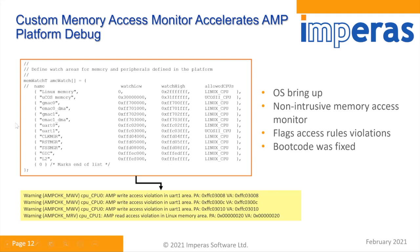For each core on the multi-core system, the memory regions it should have access to were defined as memory access rules. As the simulation ran, any violations were printed out — warnings included both the physical address and virtual memory address. This made it very easy to troubleshoot: low-level boot code problems were identified and fixed early on in the project.